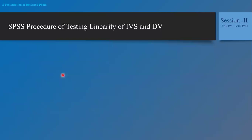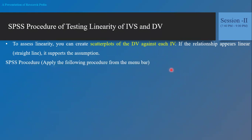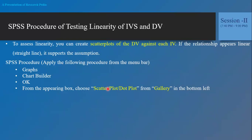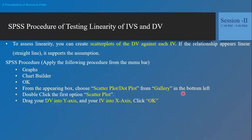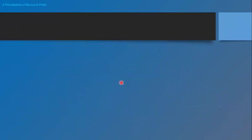To assess linearity using SPSS, you can create a scatterplot of the dependent variable against each independent variable. From the menu bar, go to Graph, then Chart Builder, and click OK. From the gallery, choose scatterplot and double-click the first simple scatterplot option. Drag your dependent variable into the Y-axis and your independent variable into the X-axis, then click OK. Double-click the output graph, select the reference line option, and then click fit line to confirm linearity.